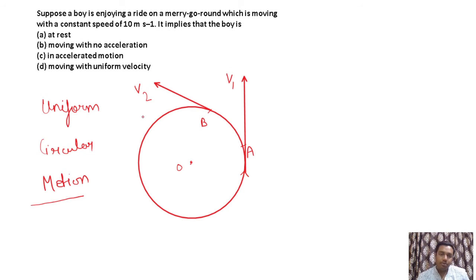So the magnitude is the same, 10 meters per second, but the direction changes. Due to this change in direction, the velocity is changing. And due to change in velocity, the object experiences constant acceleration.